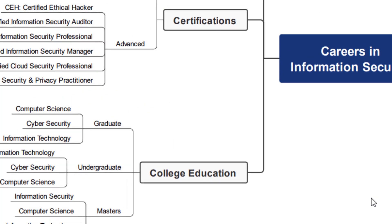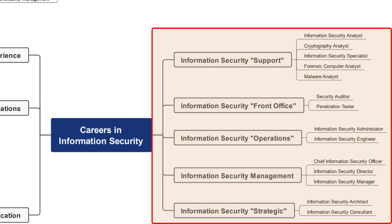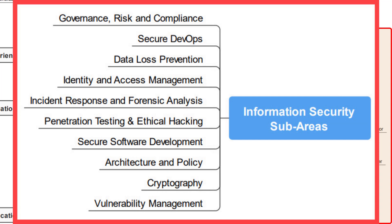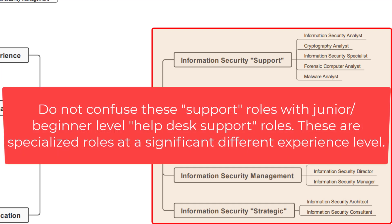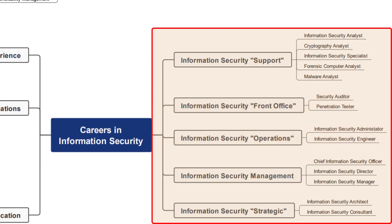Now on the right-hand side of this career map, I have the different roles spelled out. They are a little generic because they can translate into almost all of the sub-areas mentioned earlier. Starting in the upper right with the information security support roles, the job titles include: information security analyst, cryptography analyst, information security specialist, forensic computer analyst, and malware analyst — a lot of analyst-type roles. It's not just support; you will also run programs or software applications that you are responsible for. I'll make additional videos down the road to go into more detail on these.